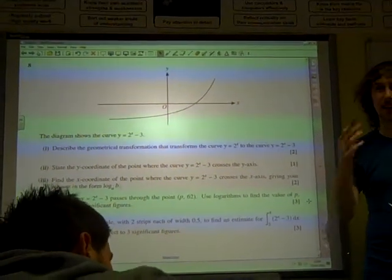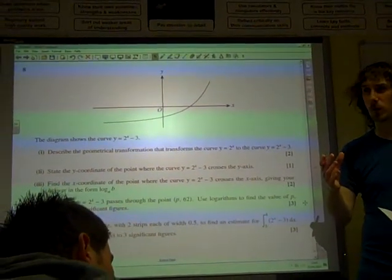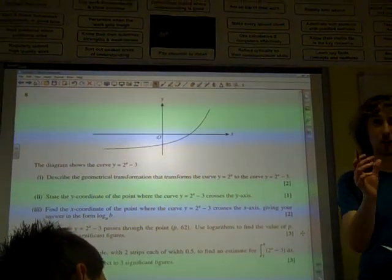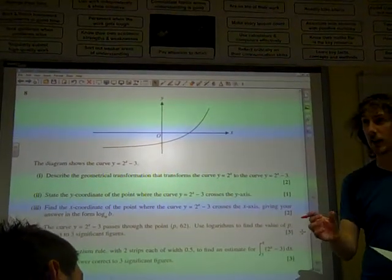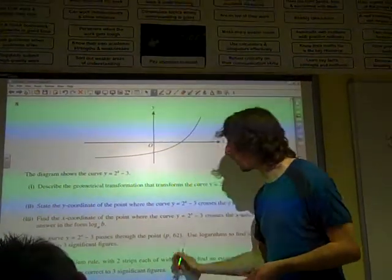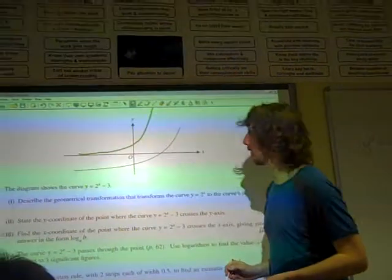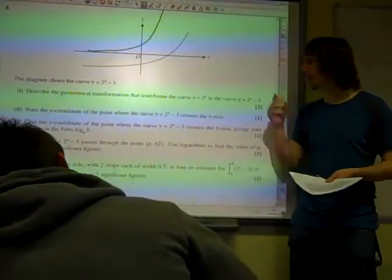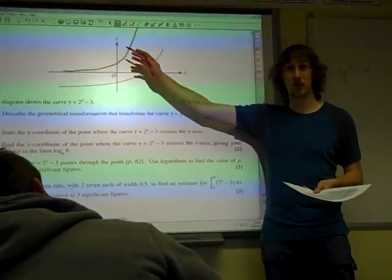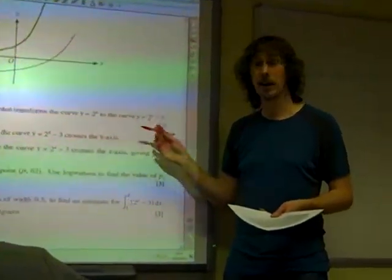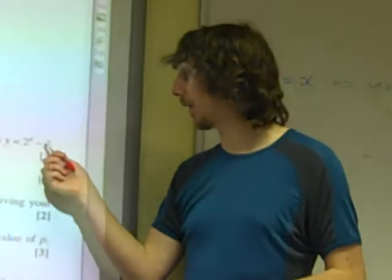I said this morning, for those of you here, that some of the standard graphs we should know include things like a to the x. And we should know that 2 to the x is a graph that does that. As soon as you remember that 2 to the x looks like that, you can already see what transformation has happened, can't you? You can see that this is 2 to the x, and it's moved down 3 units.